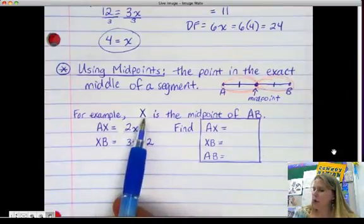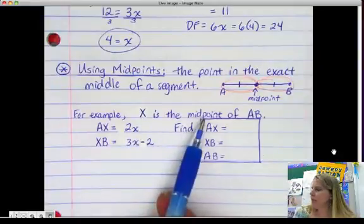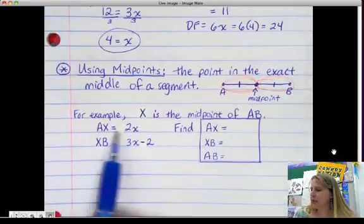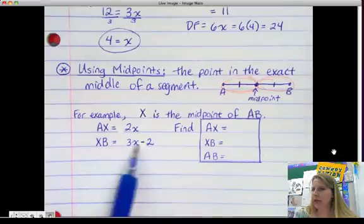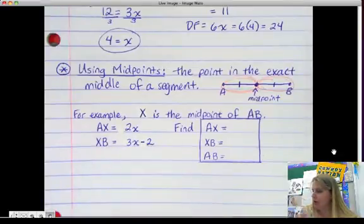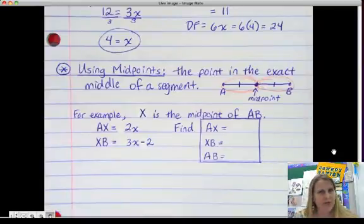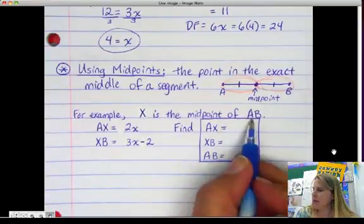Now, we have X. We're told that X is the midpoint of AB, and we're told what the length of AX is, and we're told that the length of XB is. So, there's not a picture. Whenever there's not a picture, always draw one. It will help you out tremendously.